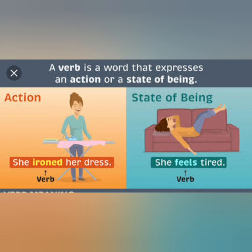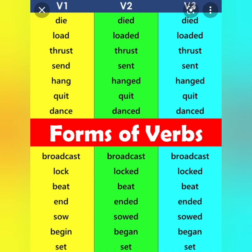A verb is a word that expresses an action or a state of being. 'She ironed her dress' — here the verb is ironing, she is doing the action. 'She feels tired' — she is lying on a sofa; this tells the state of being. It is not an action word, but it tells the state of being, so it also comes under verb. So a verb is either an action word or a state of being.